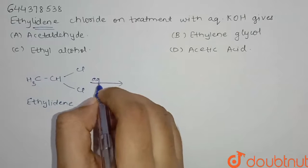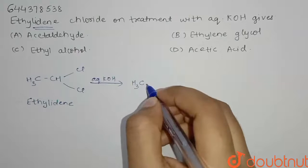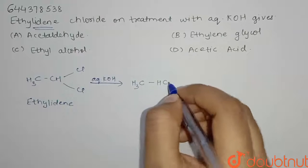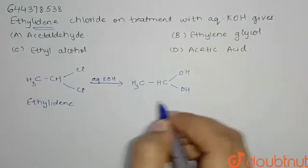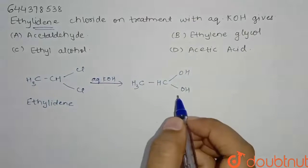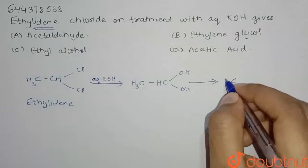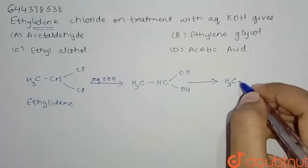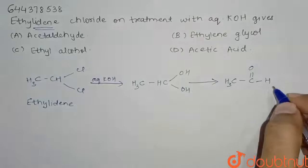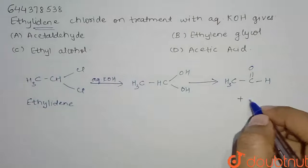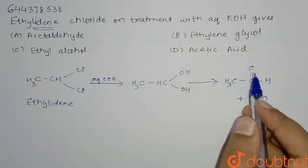With aqueous KOH, the Cl groups are replaced with OH groups, giving CH₃CH(OH)₂. This further gives the product CH₃CH=O (acetaldehyde) plus H₂O. This molecule is known as acetaldehyde.